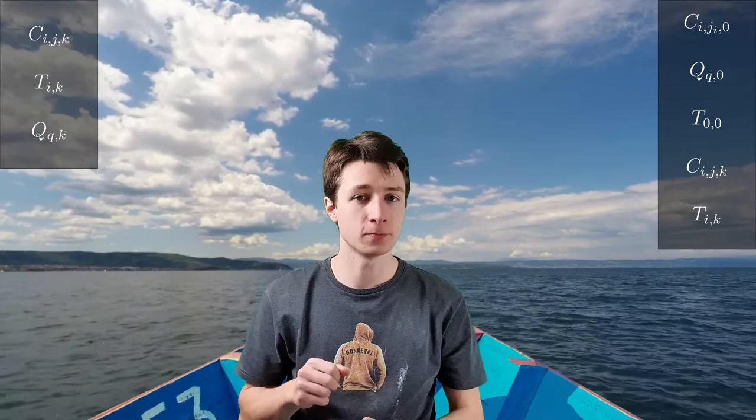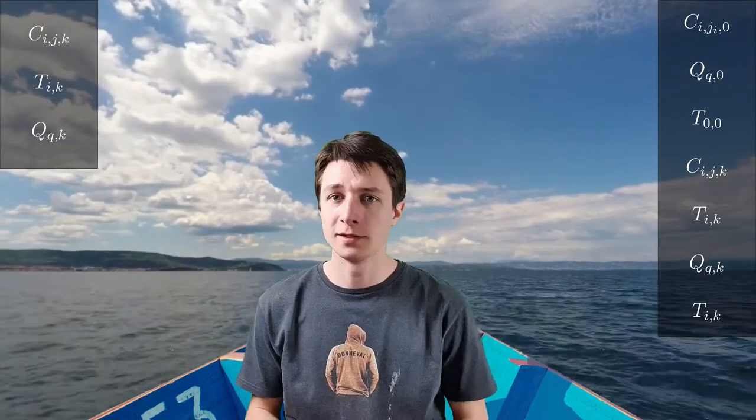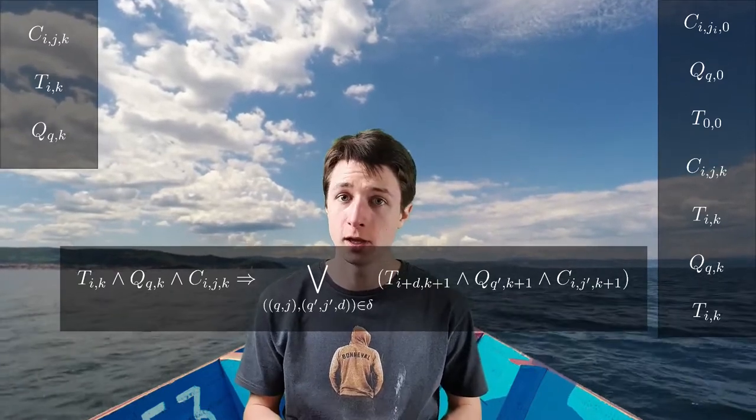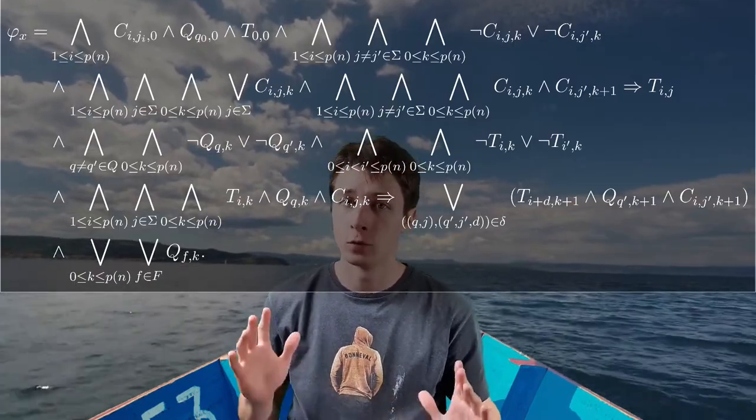t(0,0) must be true because it is the initial position of the head. c(i,j,k) must be true for exactly one j because there is always exactly one character in a cell. t(i,k) must be true when c(i,j,k) and c(i,j',k+1) are true, because to write in a cell the head must be in that position. q(q,k) must be true for exactly one q, and t(i,k) must be true for exactly one i. There is also a big formula expressing all the possible transitions, and it is mandatory to enter the accept state. Combining all of this gives this formula.